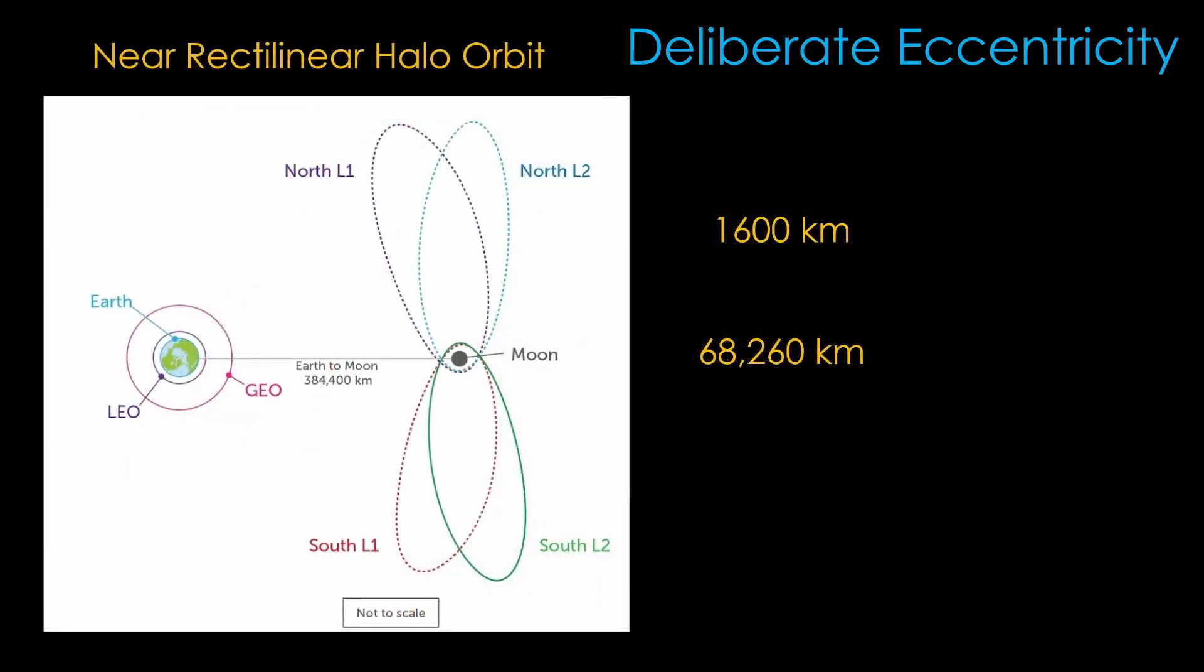The near rectilinear halo orbit used on NASA's Artemis missions to the moon uses a highly eccentric orbit that is similar in concept to the Molniya orbit. It has a closest point, known as perilune rather than perigee because the orbit is around the moon, of 1,600 kilometers and an apolune of 68,260 kilometers. This is a big orbit and the moon doesn't have a lot of gravity, so the orbital period is 6.5 days. That gives good coverage of the Artemis landing sites at the south lunar pole, though for continuous coverage multiple satellites would be needed.